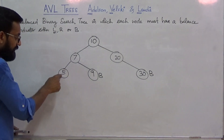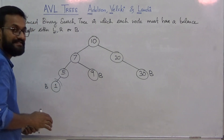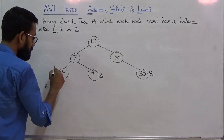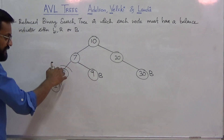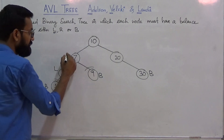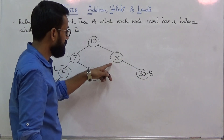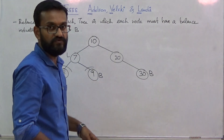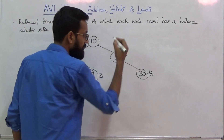For node 5, the height of the left subtree is 0 and the height of the right subtree is -1, which indicates the left subtree is of height 1 greater than the right subtree, so node 5 is left-heavy (L). For node 7, the left subtree is rooted at 5 with height 1 and the right subtree is rooted at 9 with height 0; since the left subtree's height is 1 greater, node 7 is left-heavy (L). For node 20, the left subtree is empty with height -1 and the right subtree is rooted at 30 with height 0; since the right subtree's height is 1 greater, node 20 is right-heavy (R).